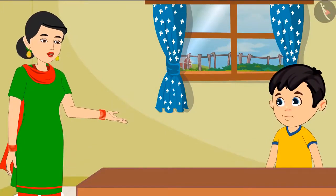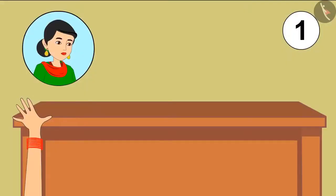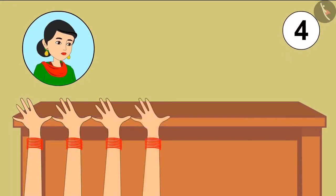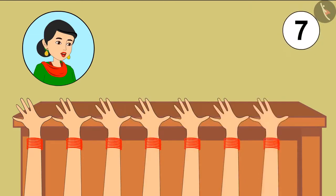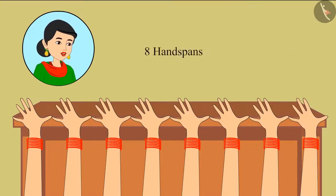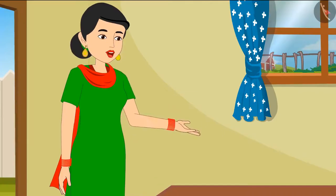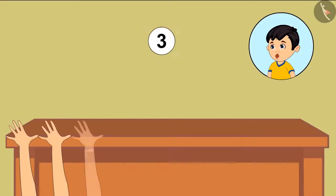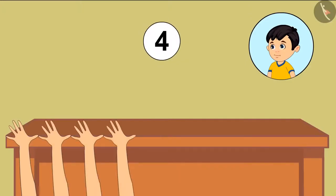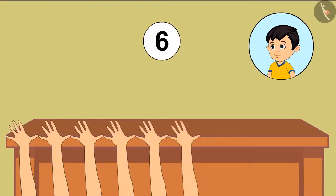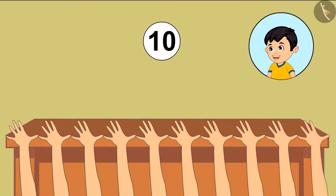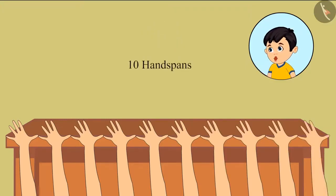Mother tells Chotu not to leave any space while measuring and demonstrates herself: one, two, three, four, five, six, seven, eight — the table is eight hand spans long. Chotu tries again properly: one, two, three, four, five, six, seven, eight, nine, ten — he gets ten hand spans.